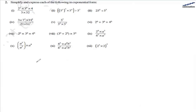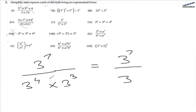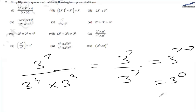In the fifth part, we have 3 raised to the power of 7 divided by 3 raised to the power of 4 multiplied by 3 raised to the power of 3. In the denominator, the base is the same, so the powers add up: 4 plus 3 equals 7. Now in both numerator and denominator we have 3 raised to the power 7. So 3 raised to the power 7 minus 7, which is 3 raised to the power of 0, equals 1.